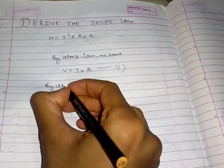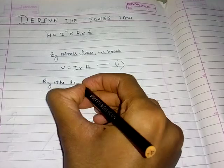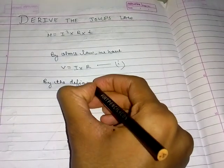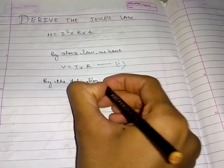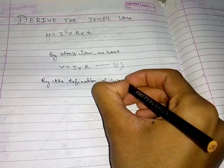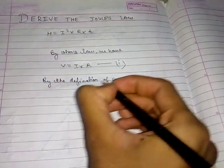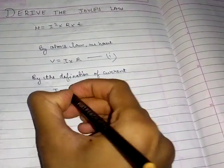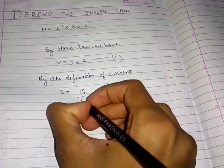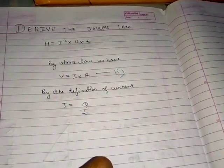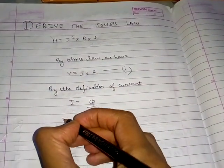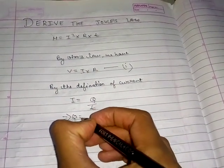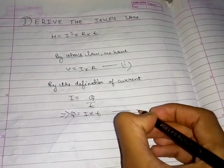By the definition of current, we have I equals Q by T, that is charge by time. So Q equals I into T. This is equation 2.